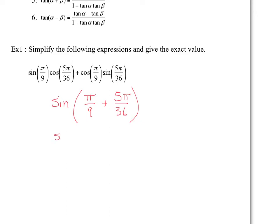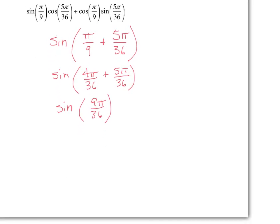To add those two fractions, you need a common denominator of 36, so multiply π/9 by 4 to get 4π/36 plus 5π/36. The sum is 9π/36. We have a common factor of 9, so dividing gives π/4. This is a value we know exactly — the exact value of sine of π/4 is √2/2, directly from the unit circle.